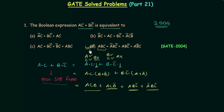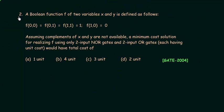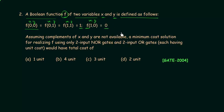Now we will move to the second problem, also taken from the same paper. A Boolean function f of two variables x and y is defined as follows: f equals 1 when x and y are 00, when x and y are 01, and when x and y are 11; f equals 0 when x is 1 and y is 0. Assuming complements of x and y are not available, a minimum cost solution for realizing f using two-input NOR gates and two-input OR gates each having unit cost would have a total cost of what? This is a very interesting and easy problem.